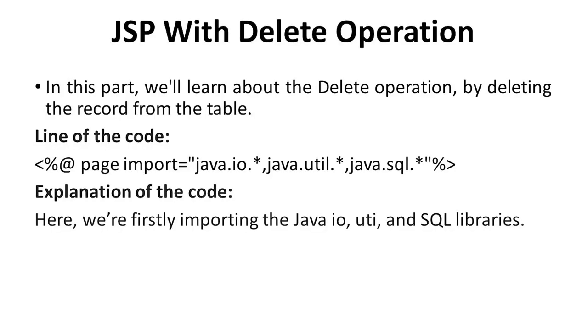In this part, we will learn about the delete operation by deleting the records from the table. The first lines of code use the page import directive: java.io.*, java.util.*, java.sql.*. Here we are firstly importing the Java input/output, utility, and SQL libraries.